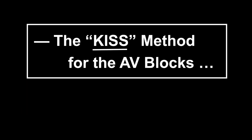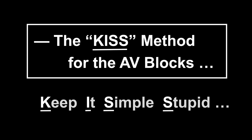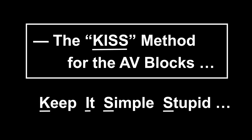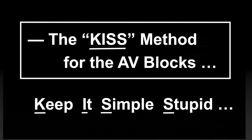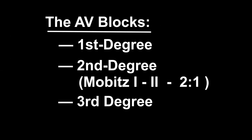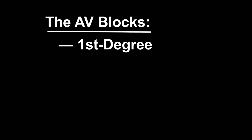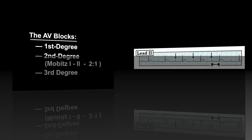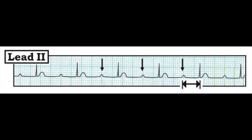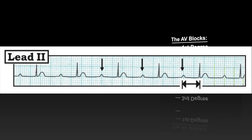For the AV blocks I'm covering today, I like the KISS method — basically, keep it simple. There are three degrees of AV block. First degree is easy to diagnose: all you do is see that there's a sinus rhythm with a long PR interval.